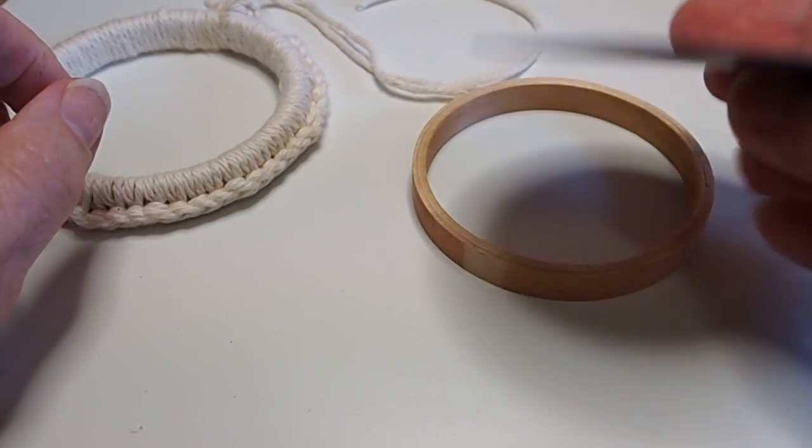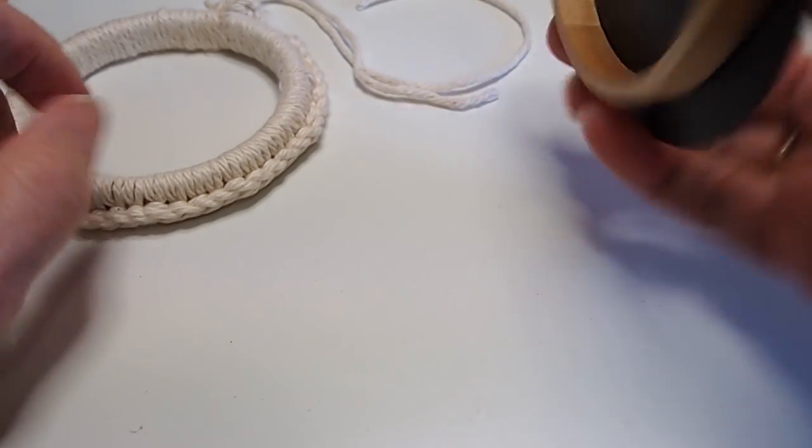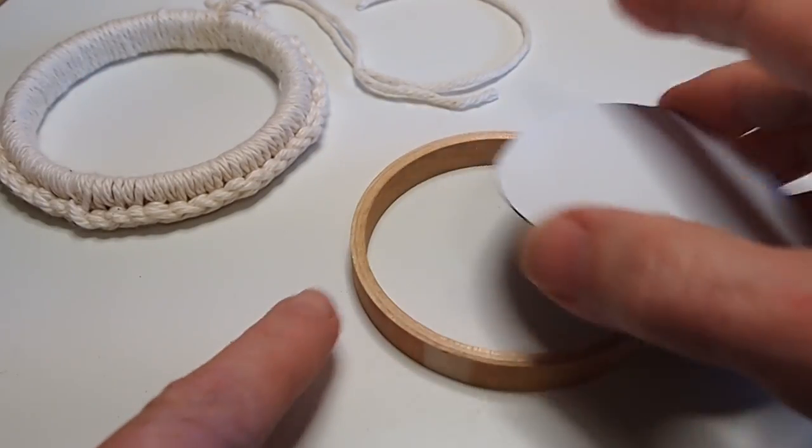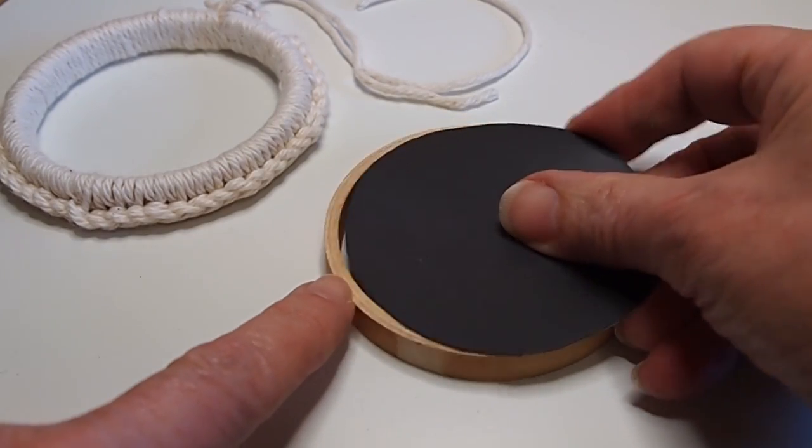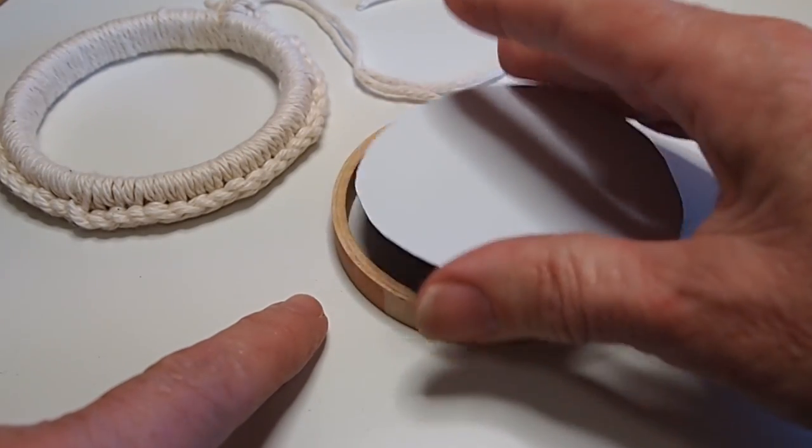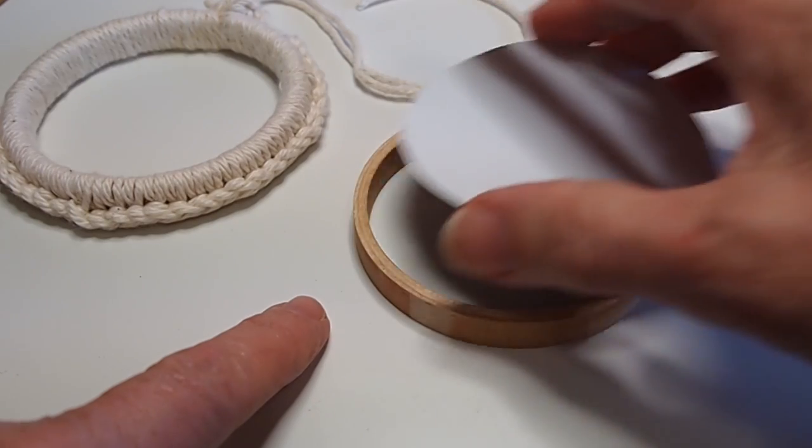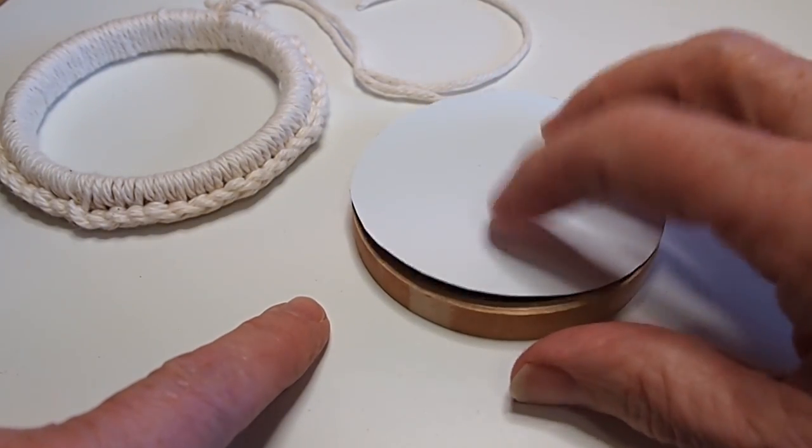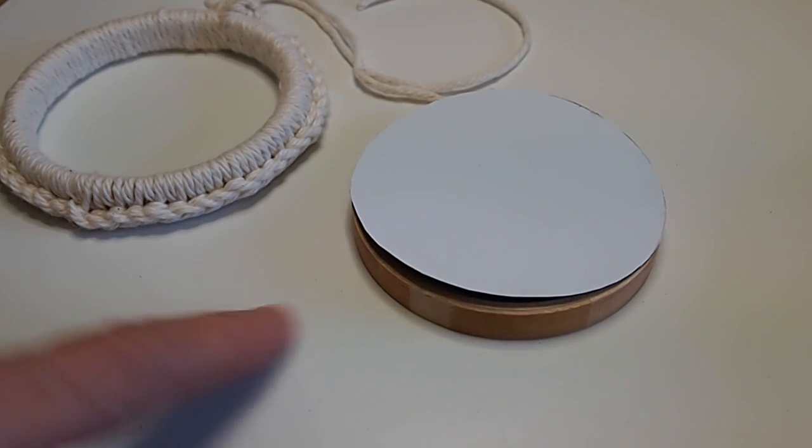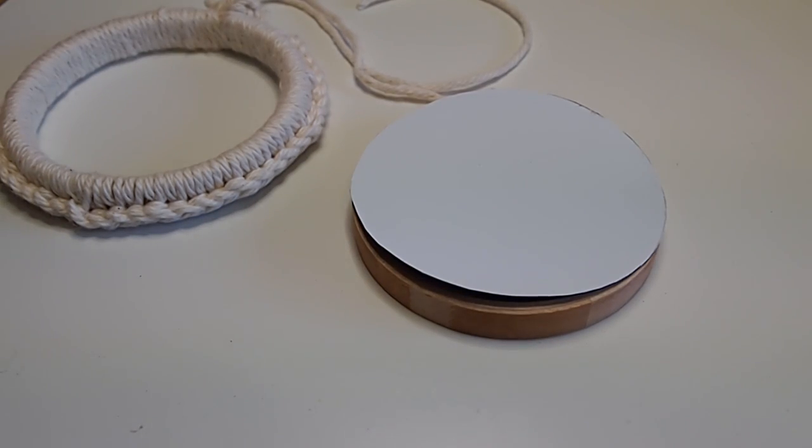We also want to cut a circle out of some type of rigid material. I'm using magnetic sheeting because I just have some on hand, but you can use cardboard, plastic sheeting, or even cork sheeting—whatever works for you. Just make sure it's rigid enough to stay firm.